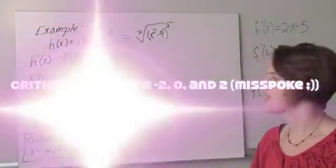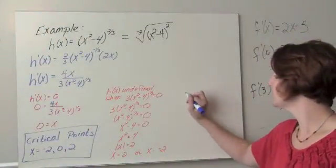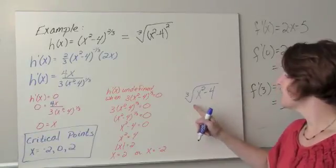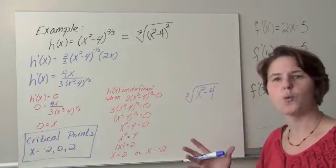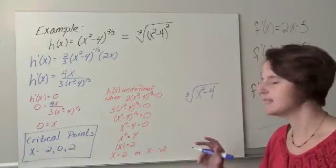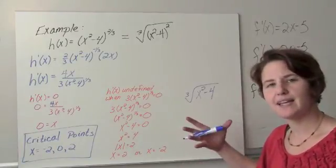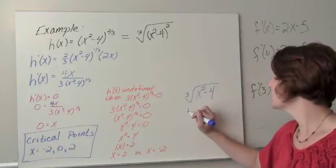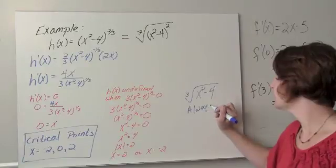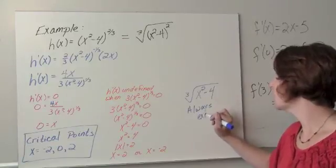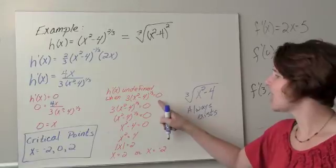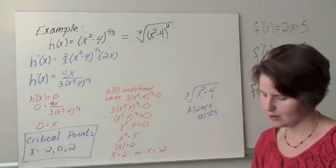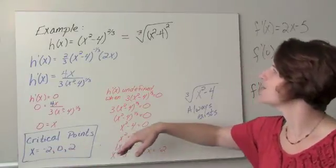You also may notice that I have a cube root of (x squared minus 4). When I think about this domain, when does the cube root make sense? Well, the cube root makes sense whether my input is positive numbers or negative numbers. So this always exists. Our problem was that it was in the denominator, and I don't want my denominator to ever equal 0. So our critical points are negative 2, 0, and 2.